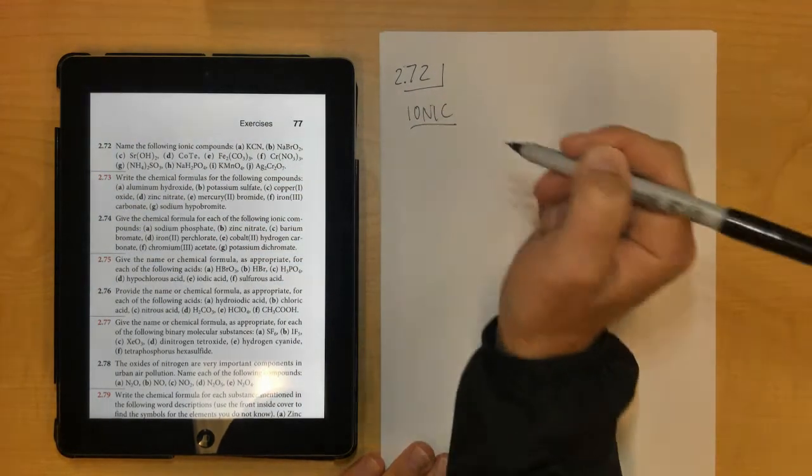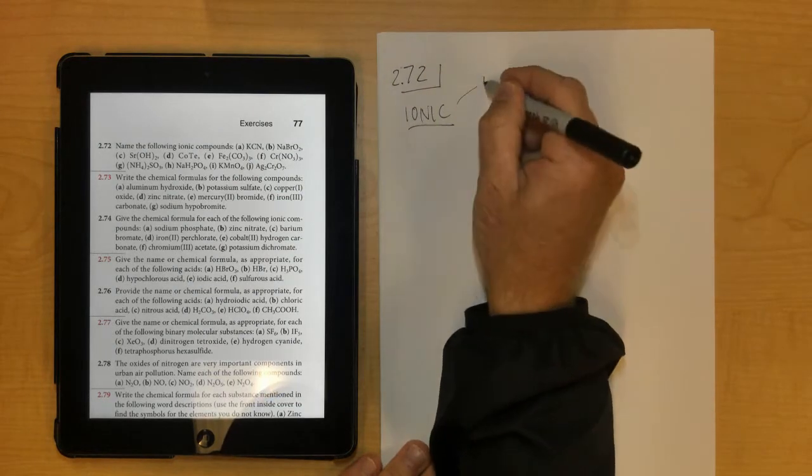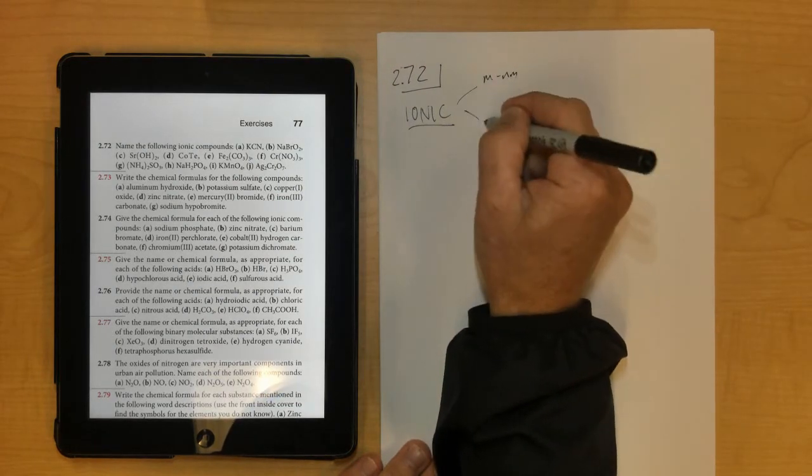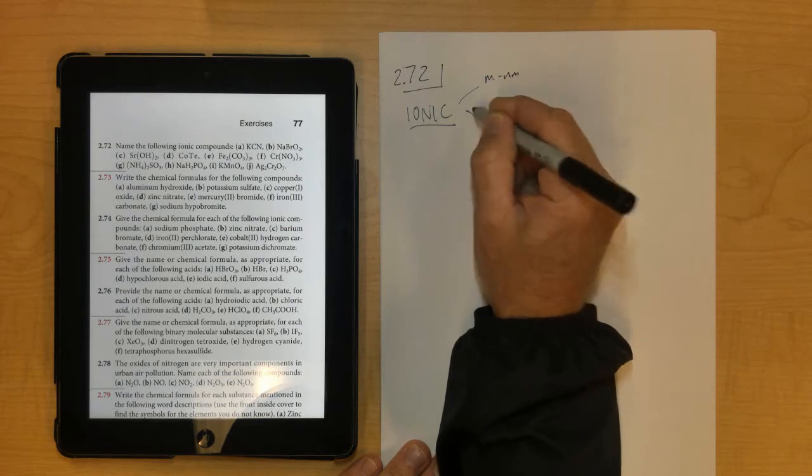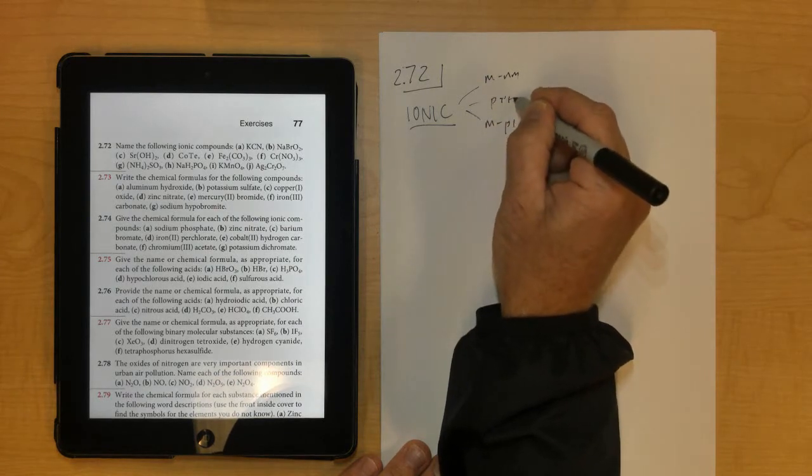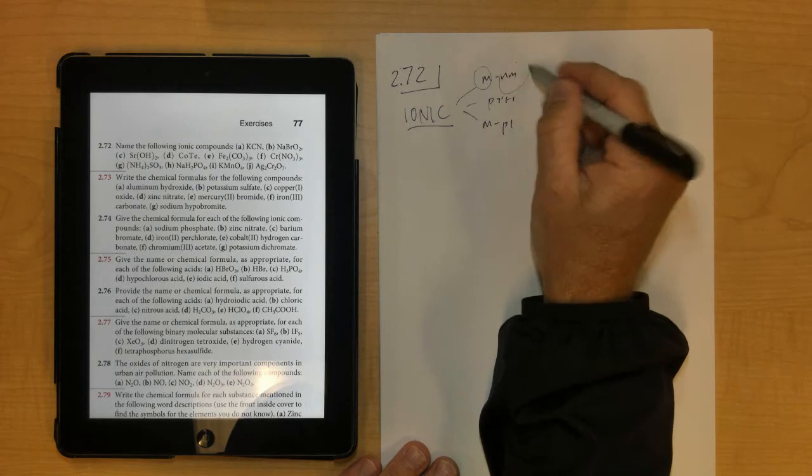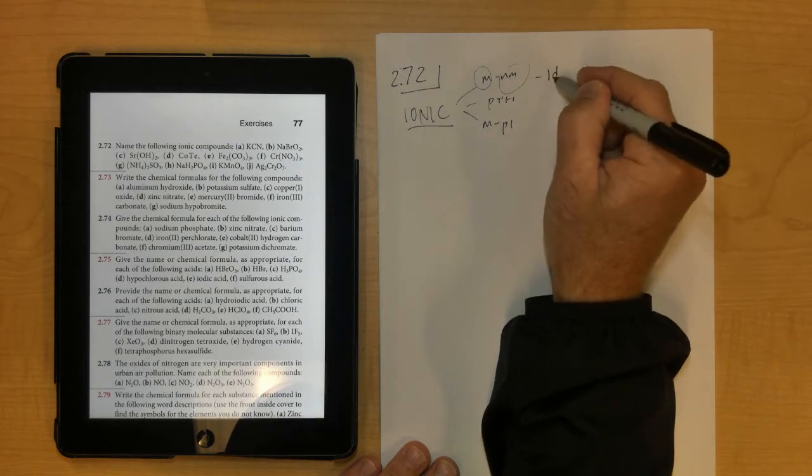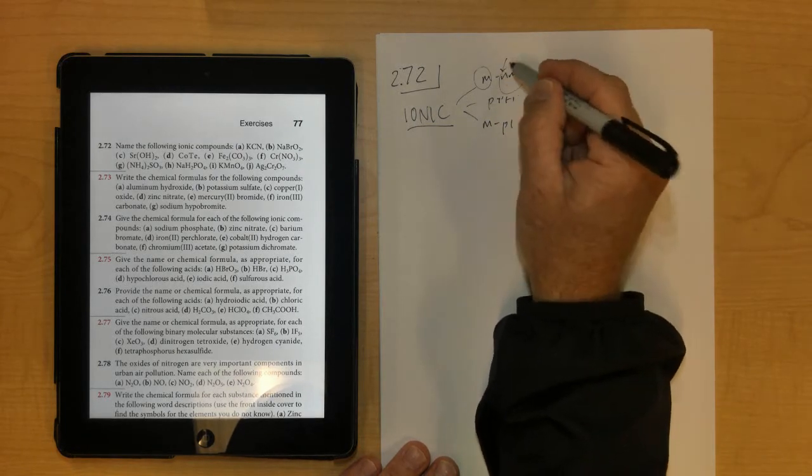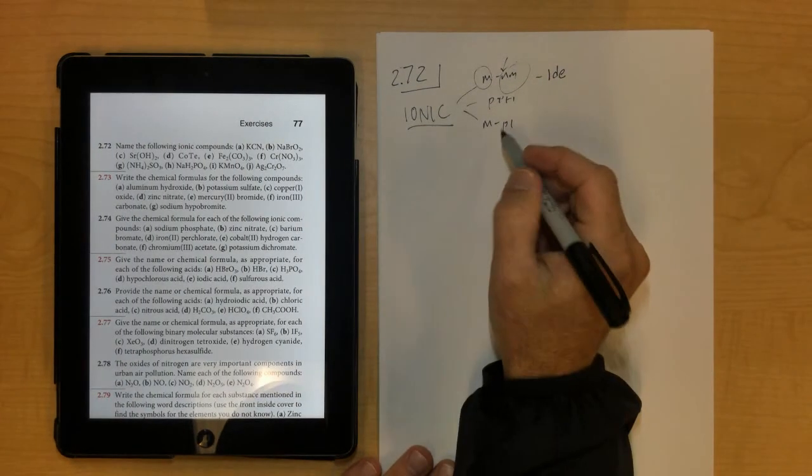When you name ionic compounds, remember it's going to be a metal and a nonmetal, or a metal and a polyatomic ion, or it could be two polyatomic ions. Bottom line, you have to name the metal first, then the nonmetal has to have an IDE ending, and you use a Roman numeral for most everything except for group 1 and 2.